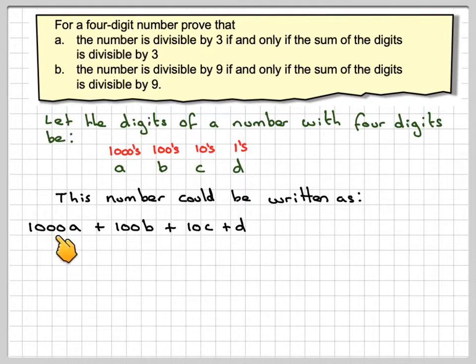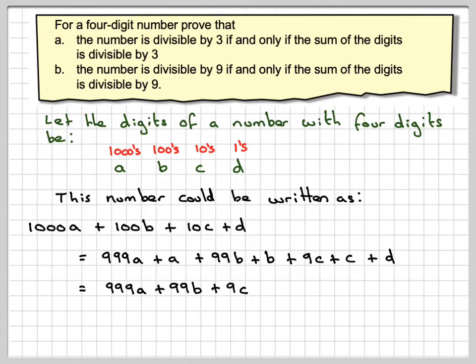We can split this up into 999A plus A, 99B plus B, 9C plus C, plus D. We're going to separate this into 999A plus 99B plus 9C, and that will leave us with A plus B plus C plus D.